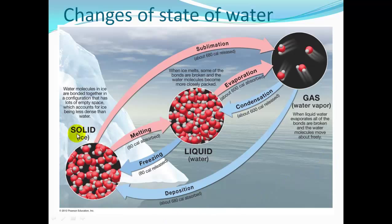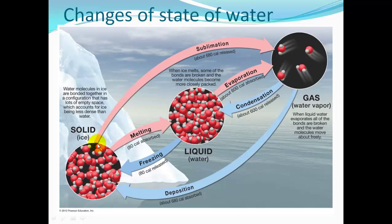Here's our diagram. We have our solid ice, our liquid, and our gas. Sublimation is ice going from solid to gas — it takes 680 calories per gram. To be deposited as a solid, 680 calories of energy are absorbed. Melting absorbs 80 calories; freezing releases 80 calories. Evaporation takes 600 calories; condensation releases 600 calories. Adding 80 and 600 gives us the 680 to go from solid directly to a gas.